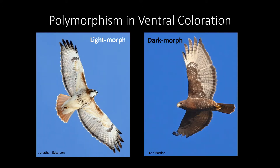Like other species of Buteo, red-tailed hawks exhibit polymorphism, or the presence of multiple color morphs in ventral coloration. Red-tails exhibit three color morphs: light, intermediate (also known as rufous), and dark. For the purposes of this project, I will only be referencing light and dark morphs. Light morphs are typically lighter in color and less heavily marked, whereas dark morphs have completely dark ventral coloration.